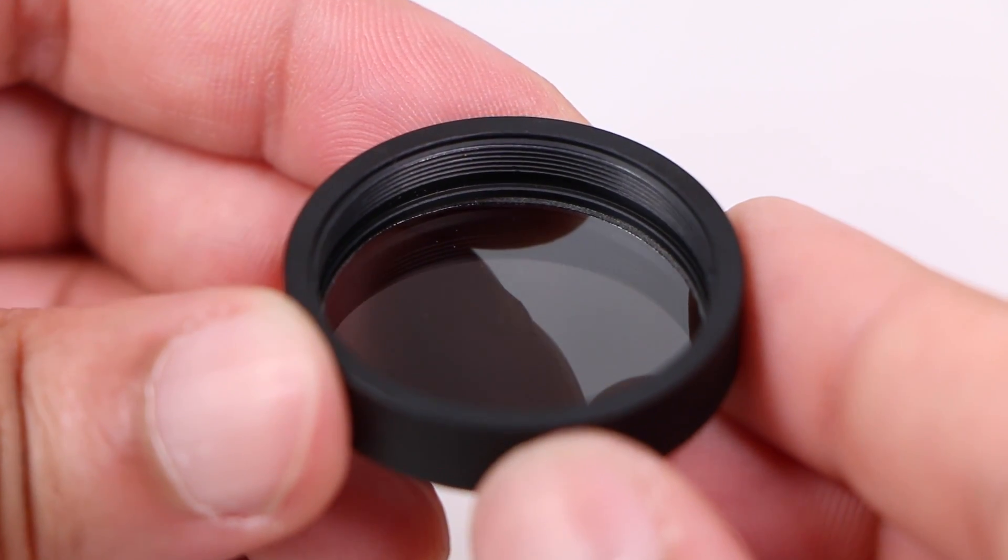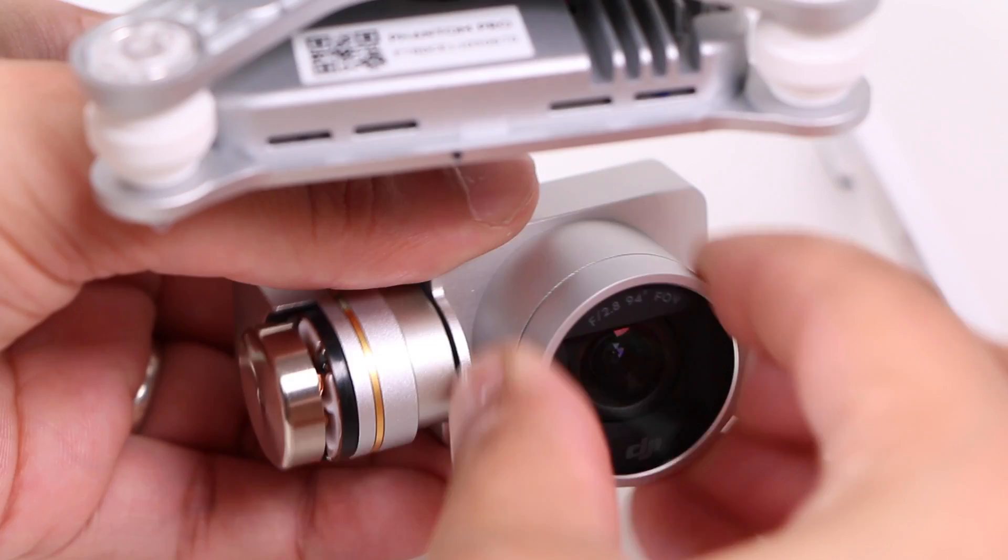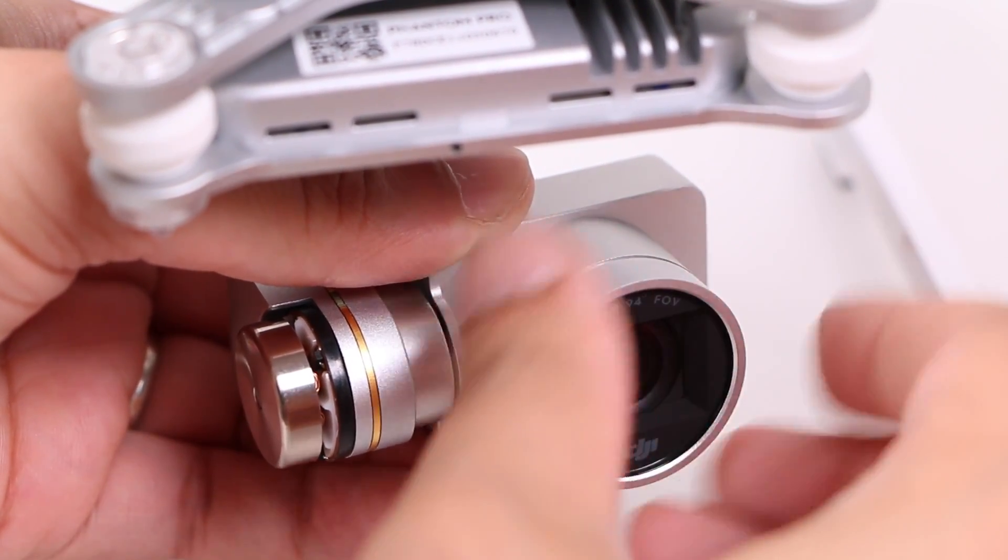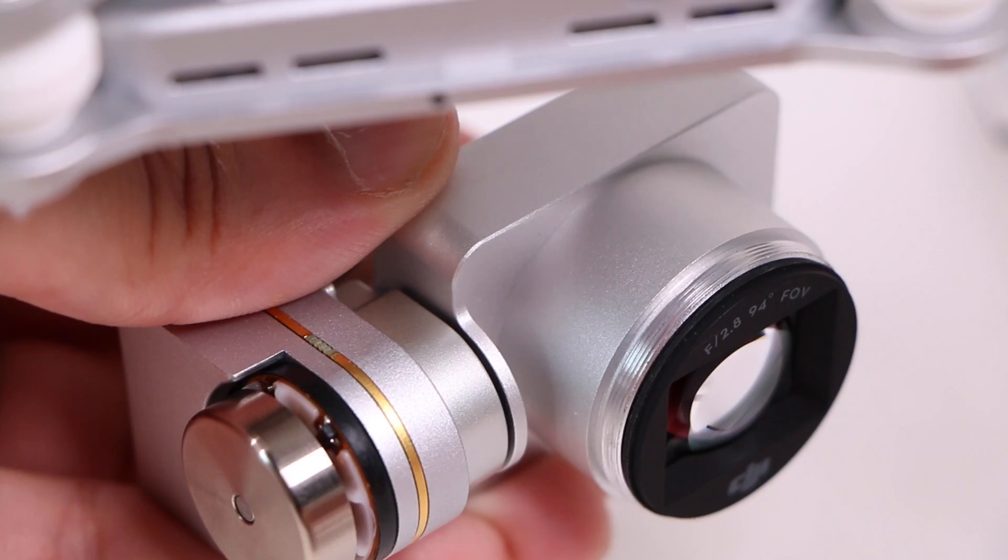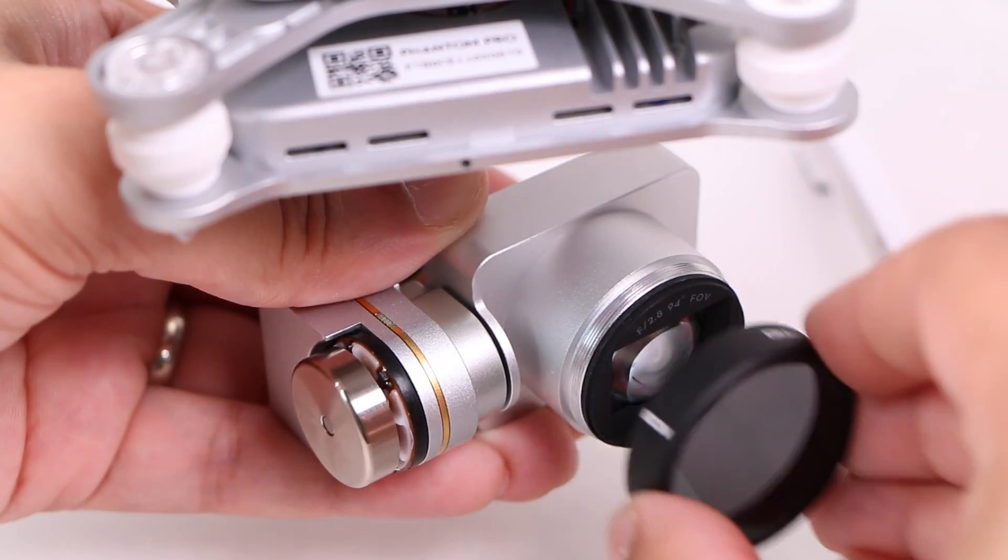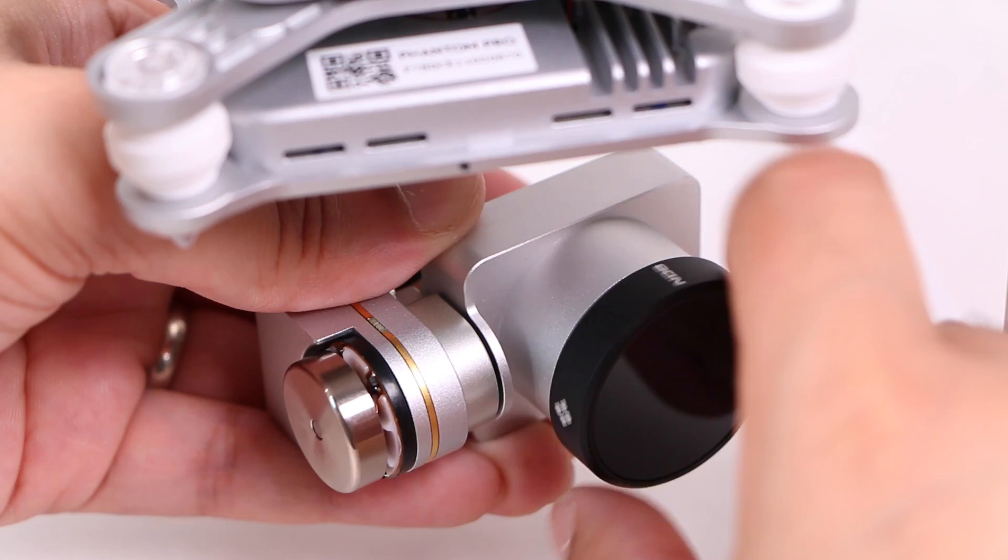Notice the built-in thread incorporated within each filter unit. This works in conjunction with the Phantom 3 camera design, since the stock UV filter already on the camera itself can be unscrewed and removed. Once removed, a Polar Pro filter can be attached to the lens by screwing the filter securely into position.